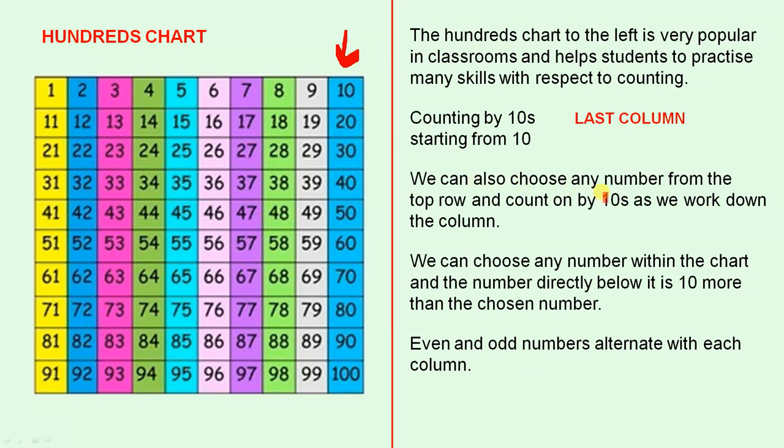We can also choose any number from the top row and count on by tens as we work down the column. So for example, if you choose this column here, 4, 14, 24, 34. If you choose that column there, 6, 16, 26, 36, etc.